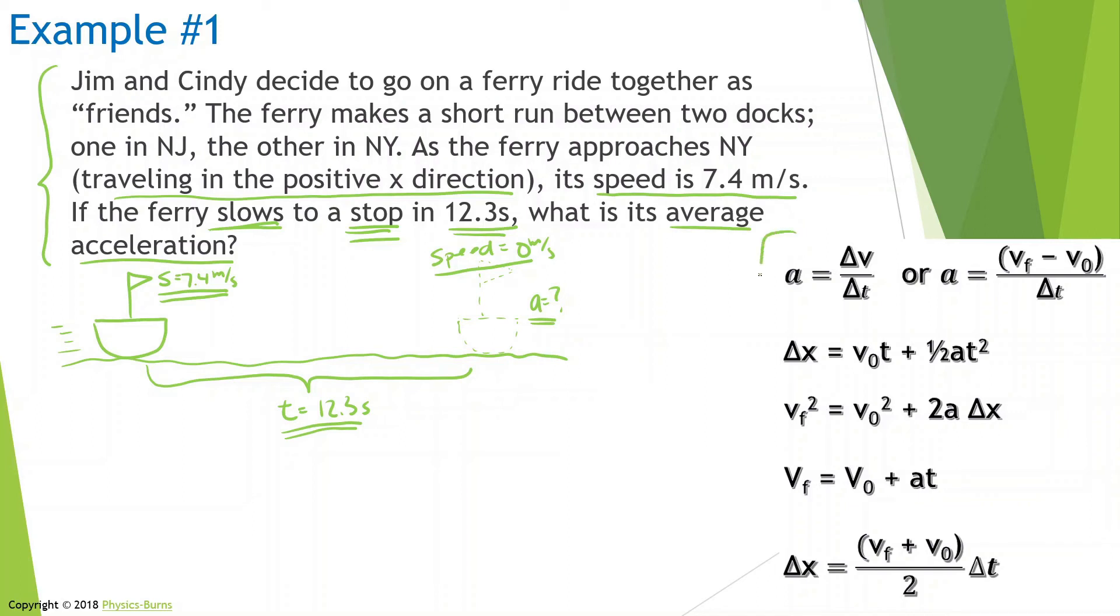Now that we have this, let's go look at our formula sheet. Let's look at this formula. Let's see what we know in this formula and what we don't know. We're going to be checking each of them. For the first one, delta x, we don't know what that is. V initial, we do know what that is—the speed at the beginning is 7.4 meters per second. Time, we do know what that is—that's 12.3. We don't know the acceleration, and we do know time. Since we don't know two of the variables, that means we can't use this formula.